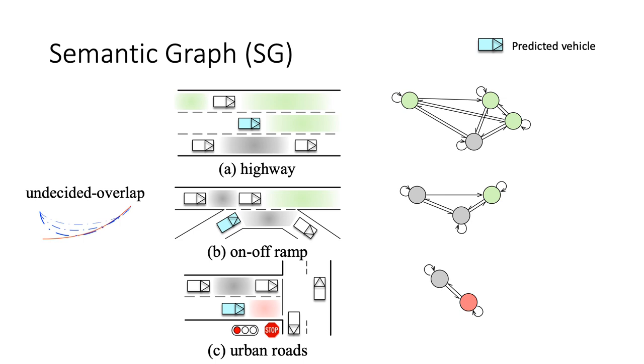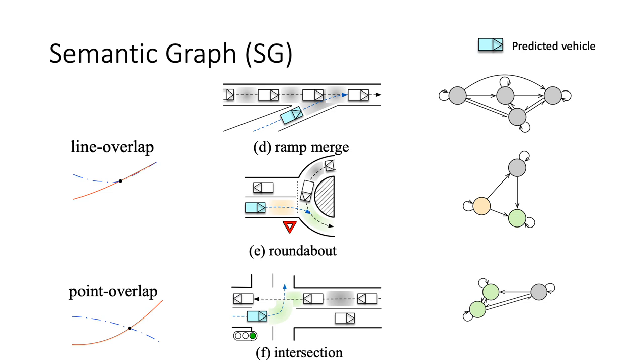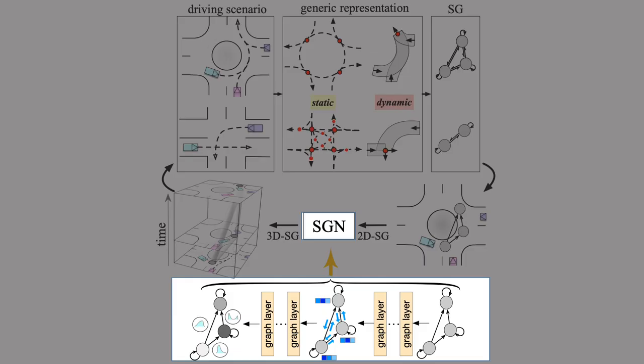Here are illustrations of DIAs under different driving environments and the corresponding semantic graphs. We can see that we are able to utilize semantic graphs to generically represent various driving scenes such as highway, on-off ramp, urban roads, ramp merge, roundabout, and intersection.